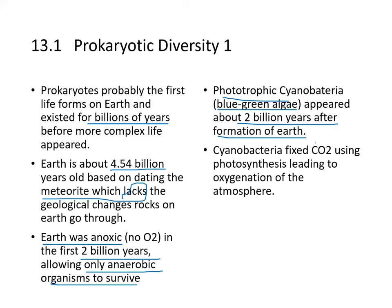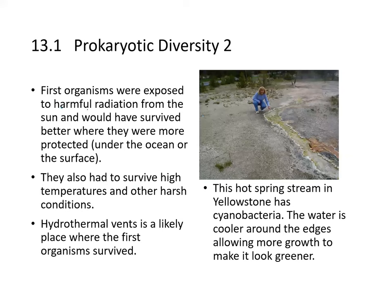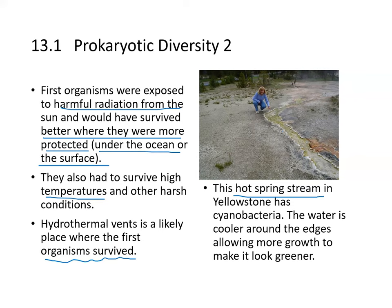Phototrophic cyanobacteria, which is what blue-green algae are, appeared about two billion years after formation of the Earth. Cyanobacteria fixed carbon using photosynthesis, which led to oxygenation of the atmosphere. First organisms were exposed to harmful radiation from the sun and survived better if protected — under the ocean or under the surface — and also had to survive harsh temperatures and other harsh conditions.